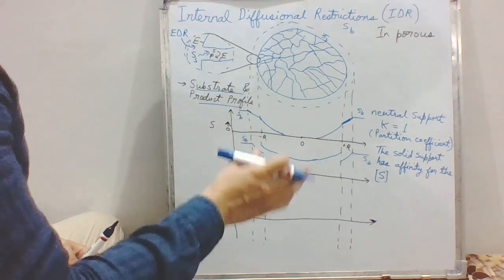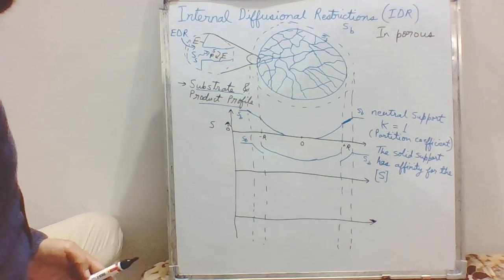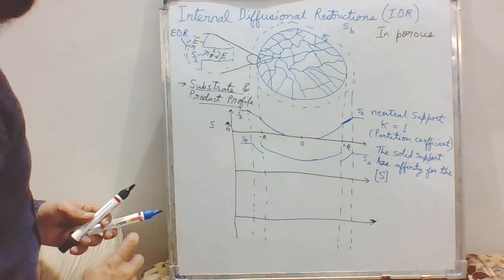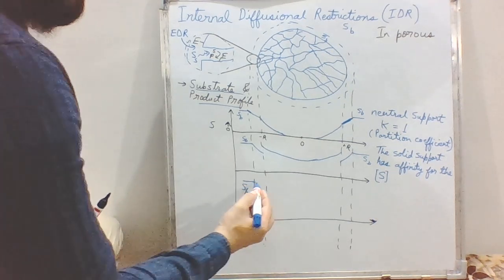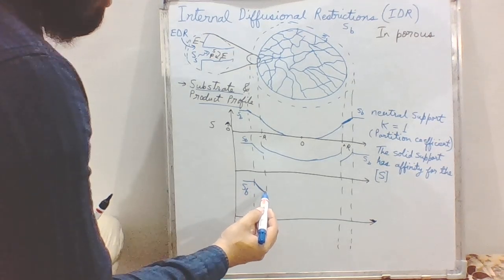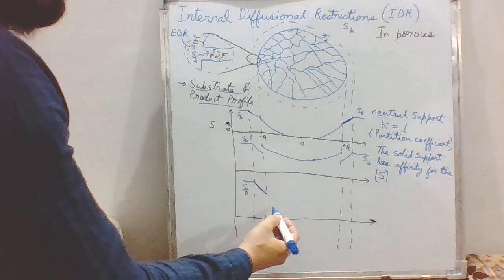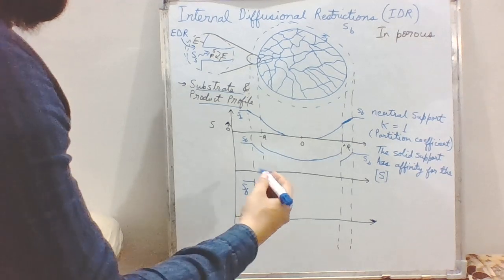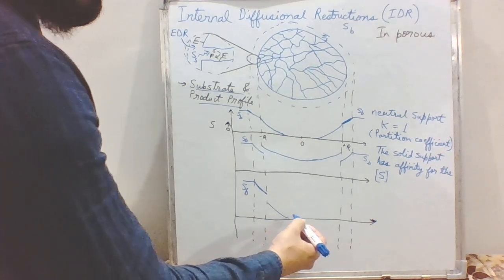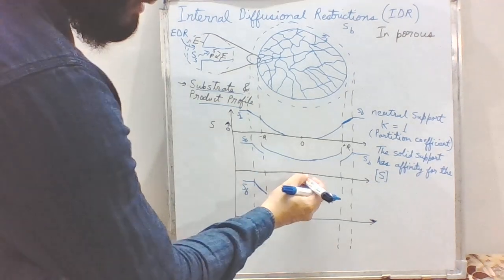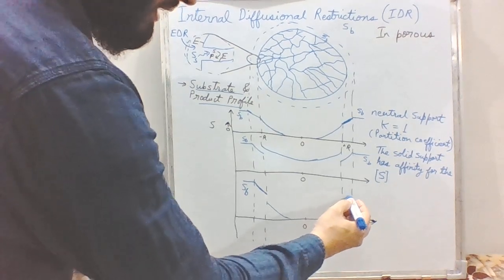If the situation is reversed — the solid support does not like the substrate and repels it — the profile is quite different. The bulk substrate concentration is constant, we have a substrate profile within the stationary layer, but the substrate encounters a lot of resistance to enter into the particle. It may enter to some extent and might or might not reach the center. This case is of course not at all recommended and not preferred.